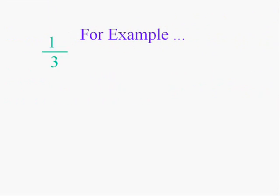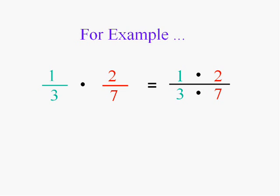For instance, one third times two sevenths is simply one times two over three times seven, or two over twenty-one.